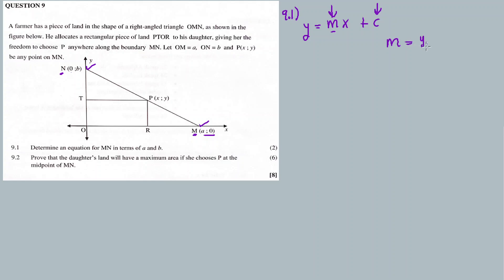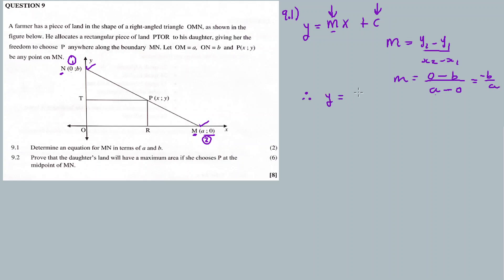The gradient equals (y₂ - y₁) / (x₂ - x₁). Let's say this is point 2 and this is point 1. y₂ is 0, y₁ is B; x₂ is A, x₁ is 0. Therefore m = (0 - B) / (A - 0) = -B/A. Therefore y = (-B/A)x + B. This is the equation of straight line M-N in terms of A and B.